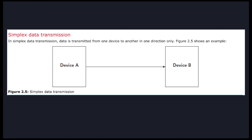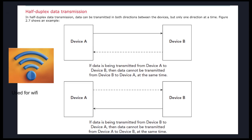Now we're getting into direction rather than number of wires. With simplex data transmission, data is only transmitted in one direction — Device A to Device B. Quite simple.